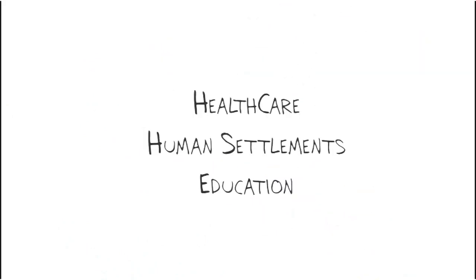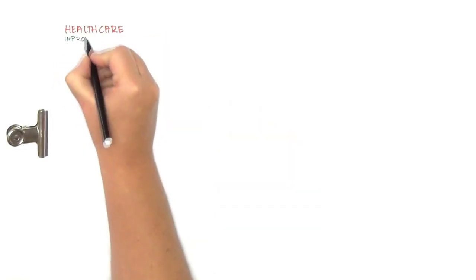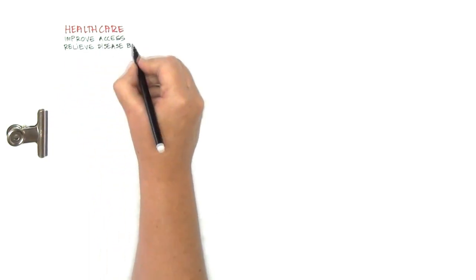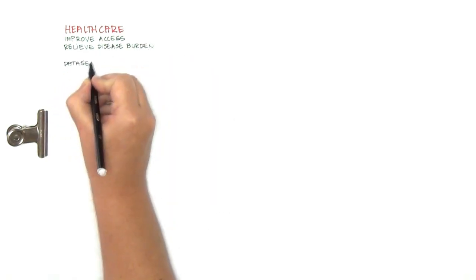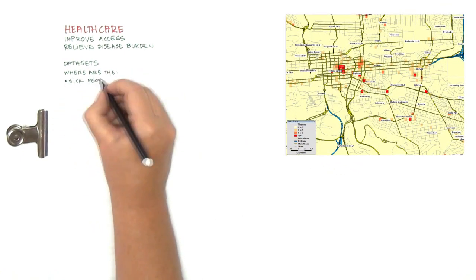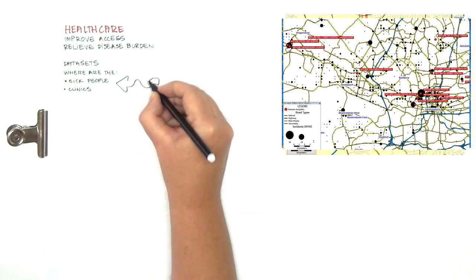Let me use examples from the healthcare, human settlements and education environments and put them into our scale. On healthcare, the challenges we want to solve are to improve access and relieve the disease burden. To do this, the datasets we will need are related to the sick, the demand, and the clinics and hospitals, the supply. We then want to map this information out and make decisions.